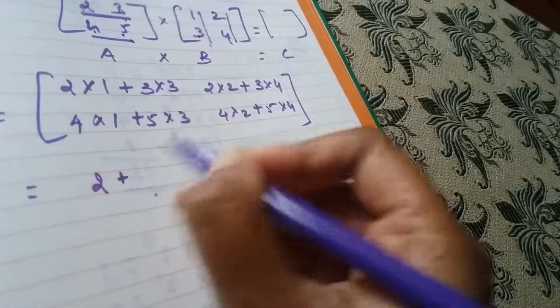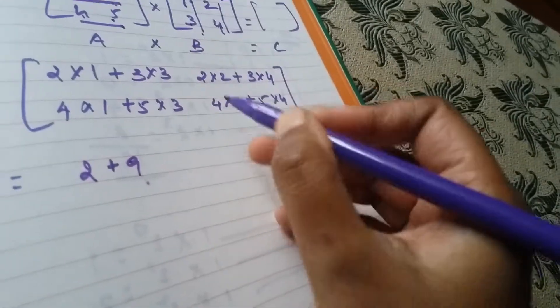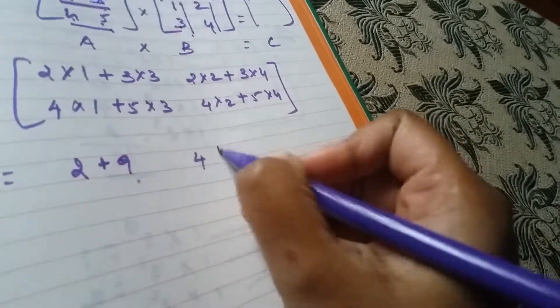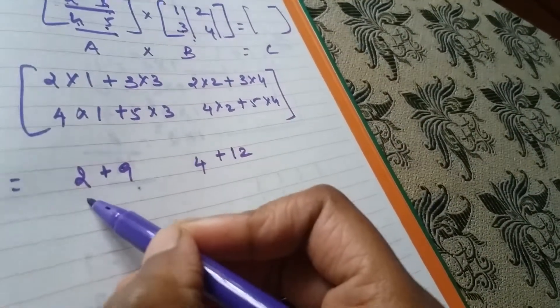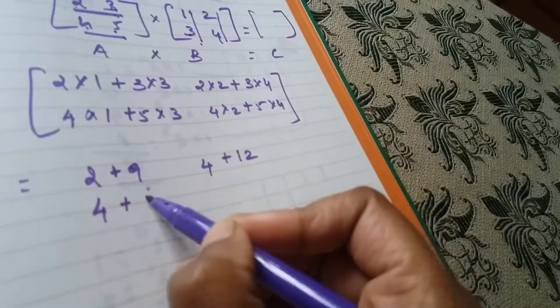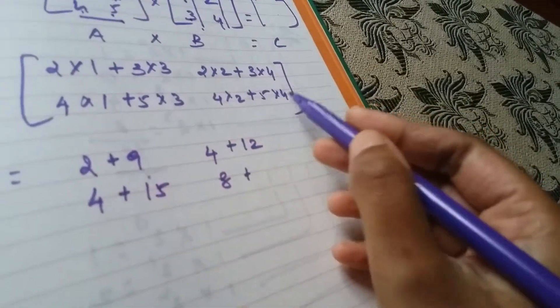2 times 1 is 2, plus 3 times 3 is 9. 2 times 2 is 4, plus 3 times 4 is 12. 4 times 1 is 4, plus 5 times 3 is 15. 4 times 2 is 8, plus 5 times 4 is 20.